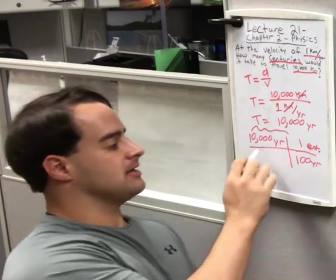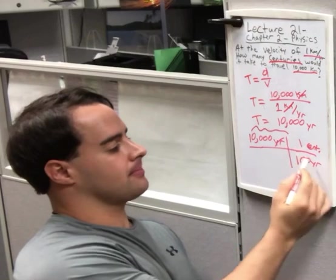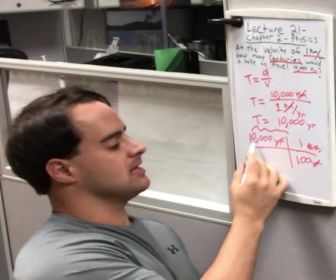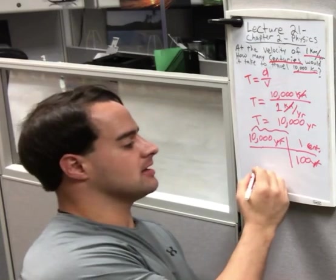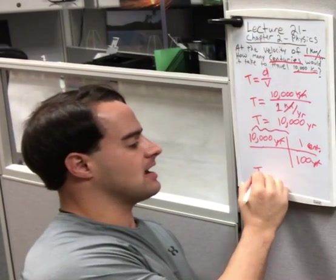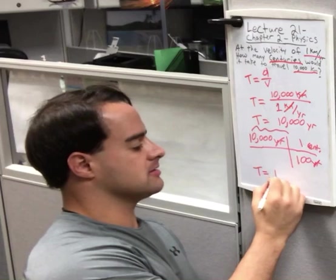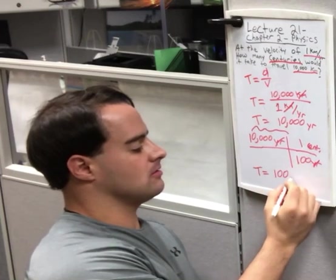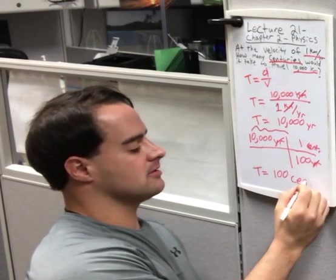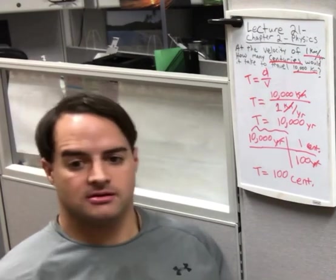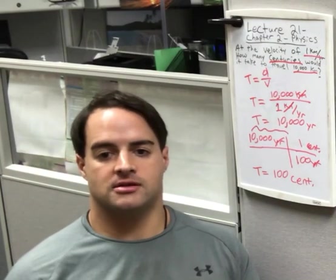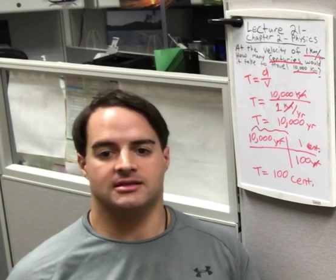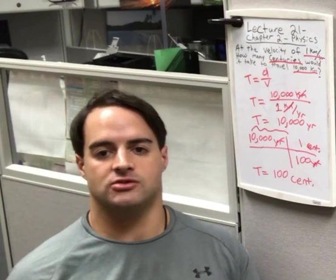So, the time is 100 centuries. To travel 10,000 kilometers at the speed of 1 kilometer per year, it would take 100 centuries, or 10,000 years.